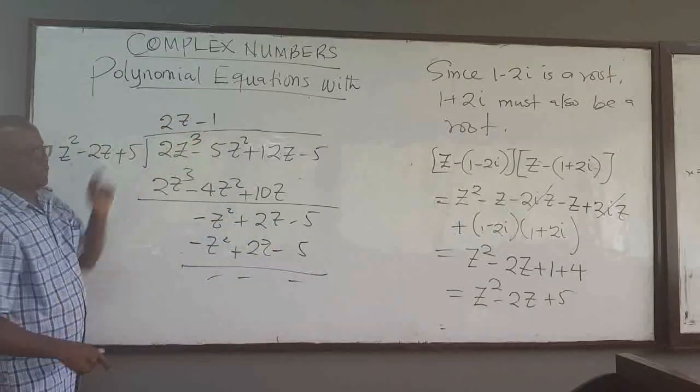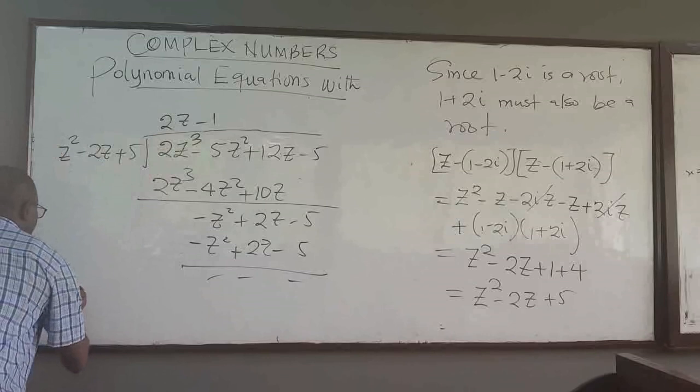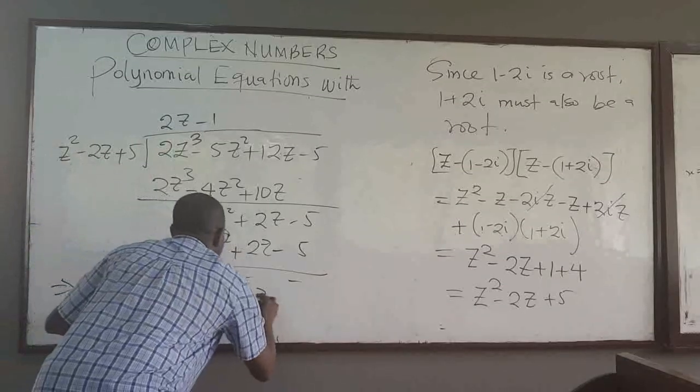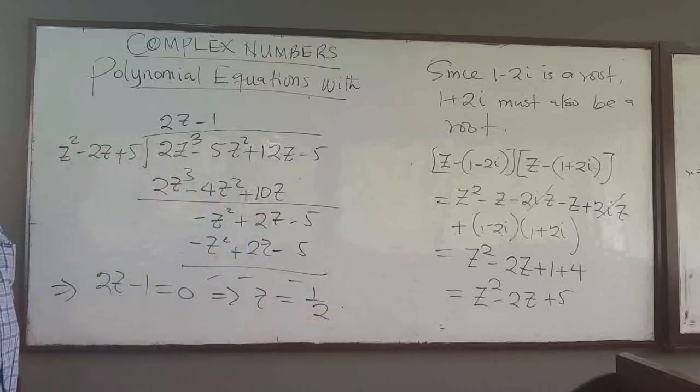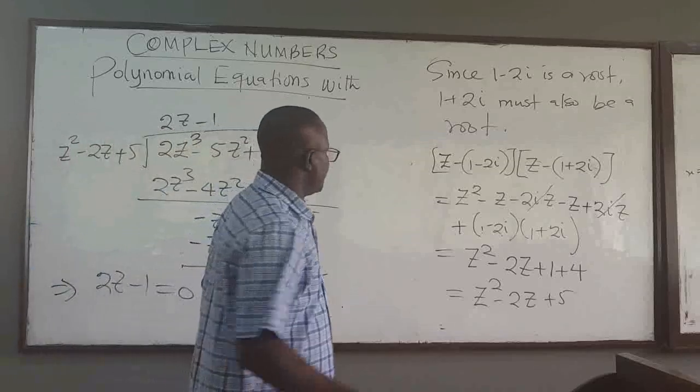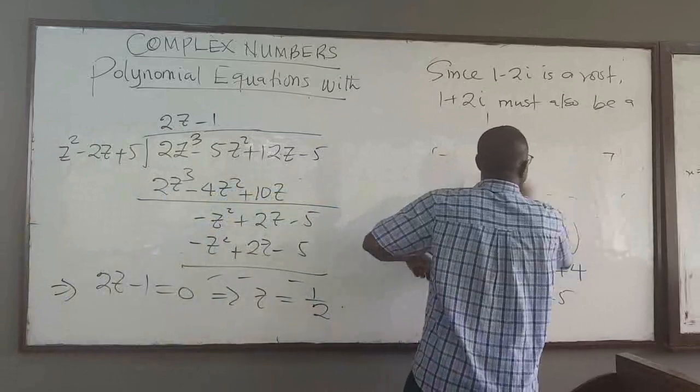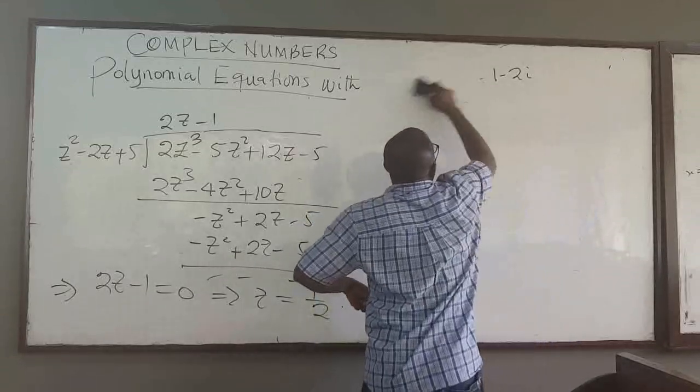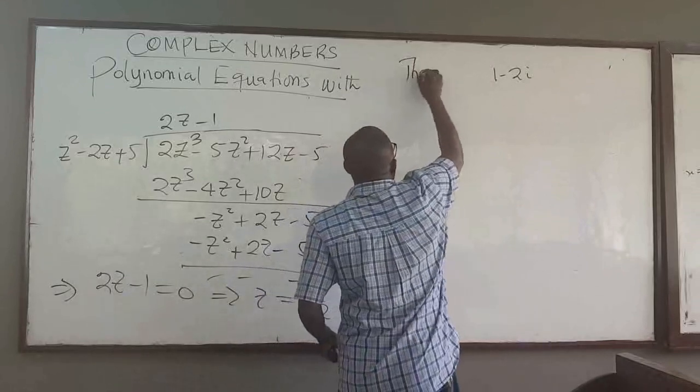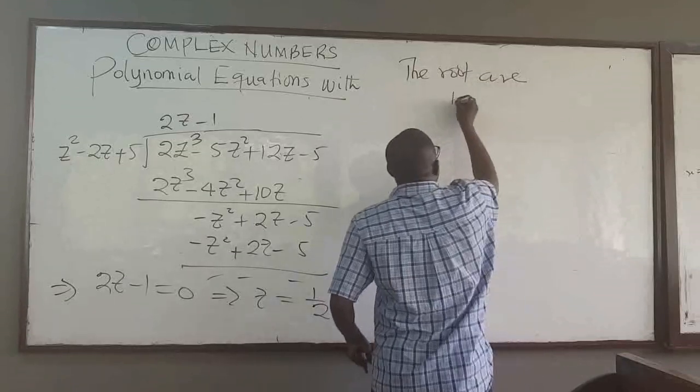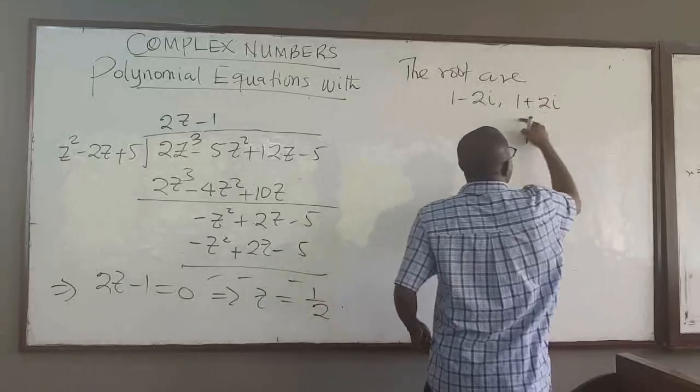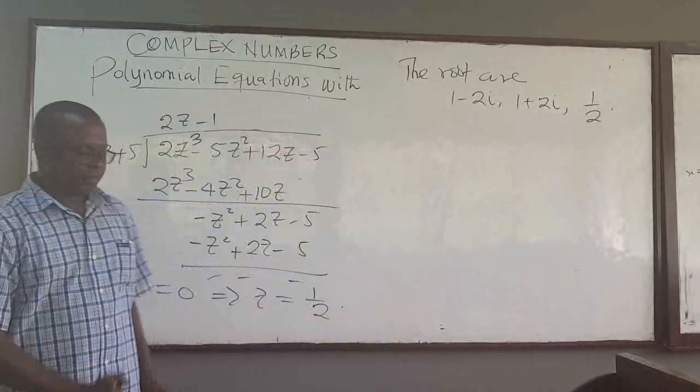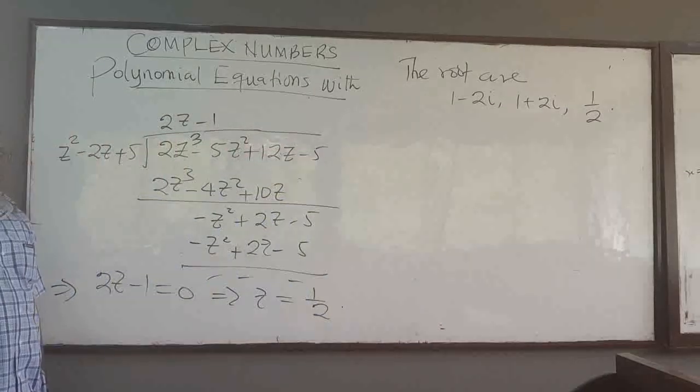So when I divide it, I get this factor, which is the third one. So this implies that 2z minus 1 is equal to 0, which is the other root. So z is equal to 1/2. So we have the roots of the polynomial. The roots are: I have 1 minus 2i, 1 plus 2i I get this for free, and then the other root is 1 over 2. So these are the three roots of the complex polynomial.